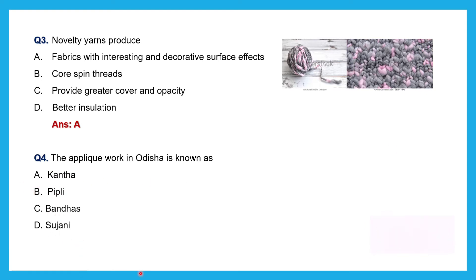Fourth question: The applique work in Odisha is known as — Kantha, Pipli, Bhandas, or Sujani? Kantha is a type of embroidery originated in West Bengal. Sujani is also a type of embroidery similar to Kantha but more intricate — it originated in Bihar. Bhandas and Pipli are both traditional textiles of Odisha, but the difference is that Bhandas is not an applique work. In Bhandas, the yarn is made using a tie and dye method before weaving.